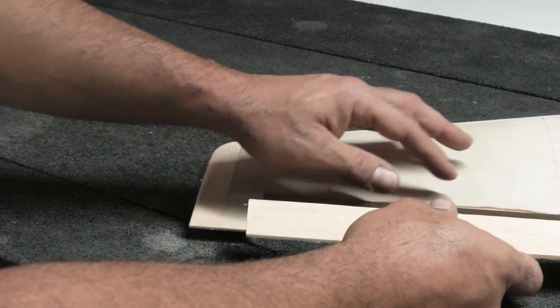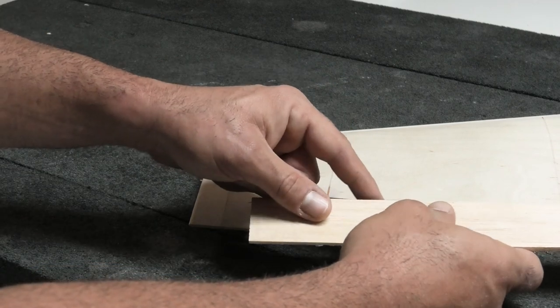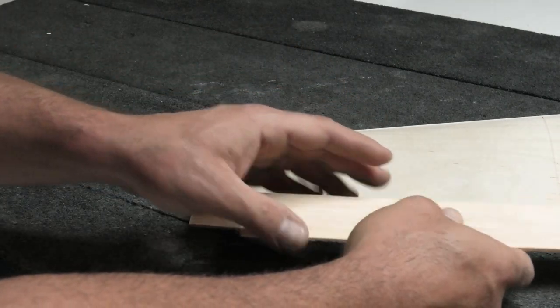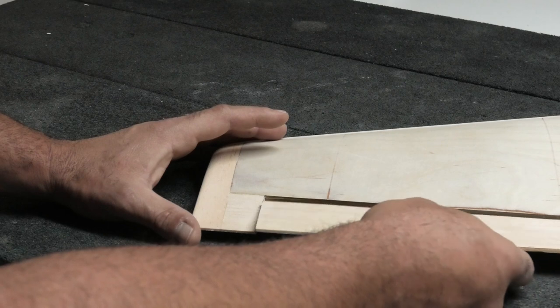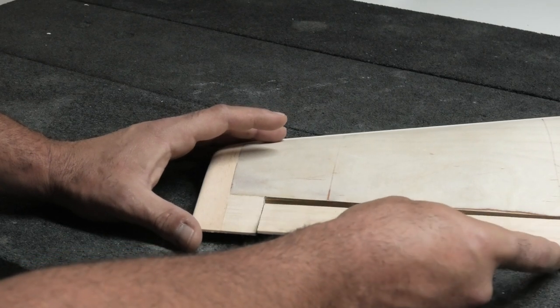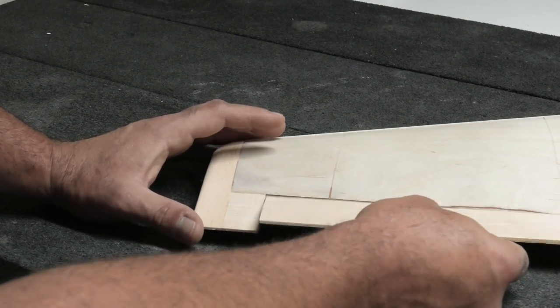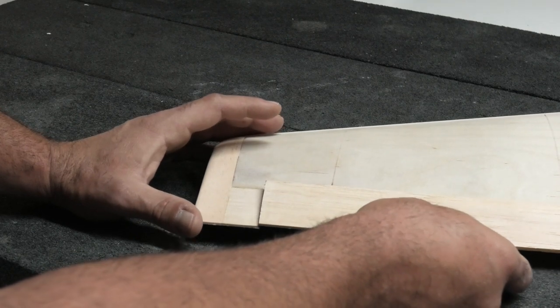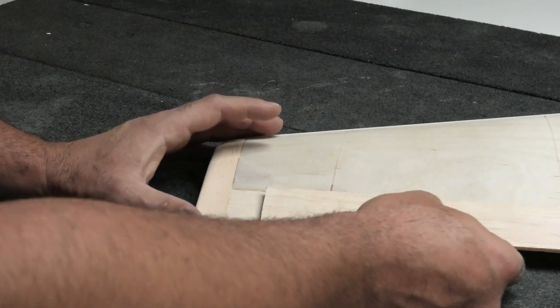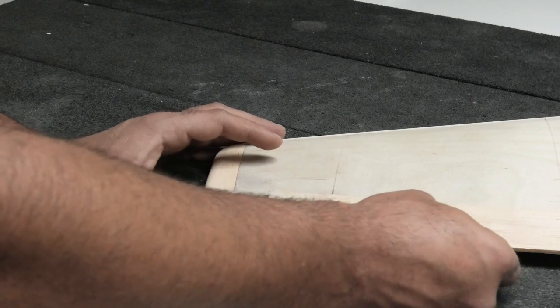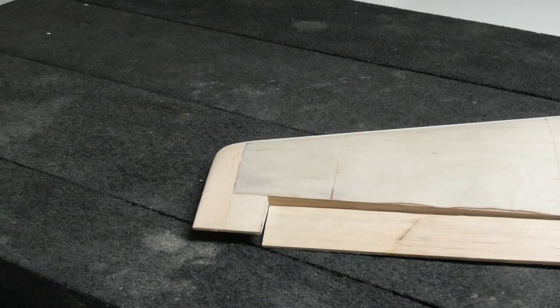After I do that, I'm probably going to install the hinges at least temporarily. Then that will basically wrap up all of the wood construction or major construction of the wing. Then we can move on to the little canopy tray we have to make.